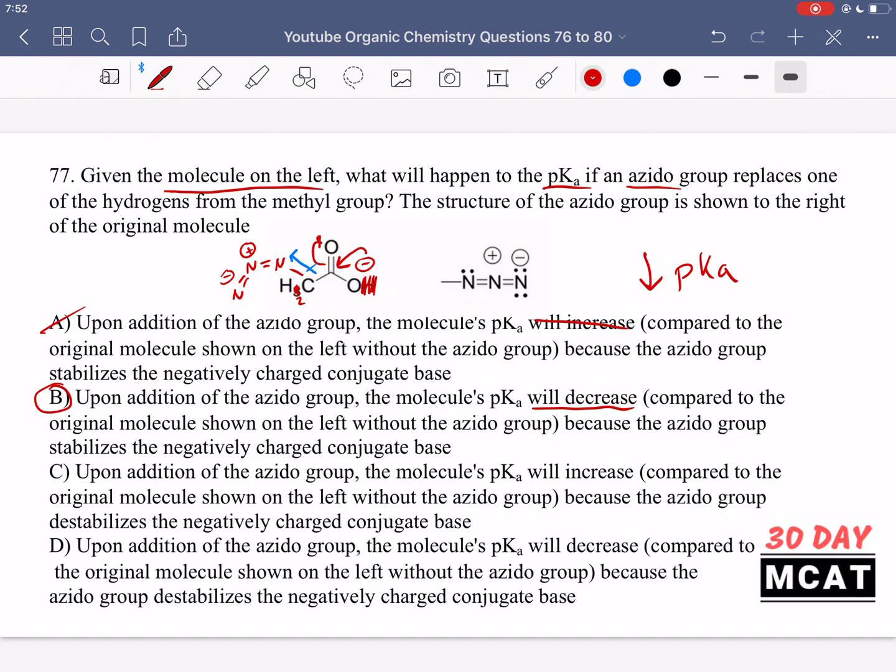Option C is saying once again pKa will increase because of that - we cross out option C. Option D is saying upon addition of the azido group, the molecule's pKa will decrease, that's fine, but the explanation is because the azido group destabilizes the negatively charged conjugate base. If it destabilized that conjugate base, that means it's going to be more reactive and not stay around for a while, meaning it's going to go back towards the acid form. Therefore, we don't have a stronger acid and lower pKa. That logic is incorrect. It's because it stabilizes the conjugate base that the conjugate base stays around more, and then we have a more acidic carboxylic acid. So B is the correct answer.